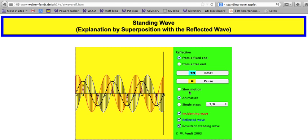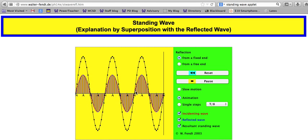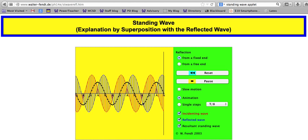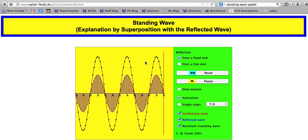So here we have our nodes, and then in these locations we have the most vibration, and that's where our antinodes are going to be.